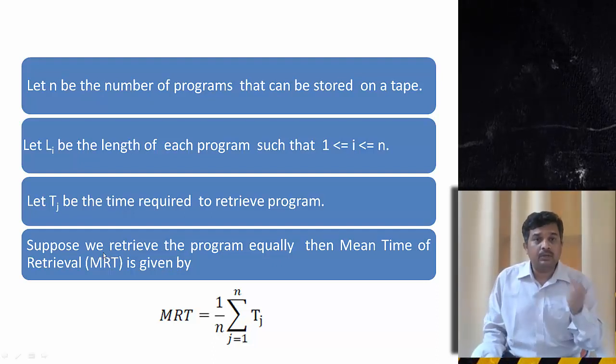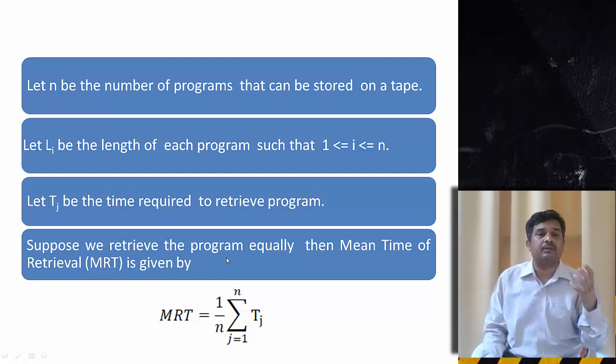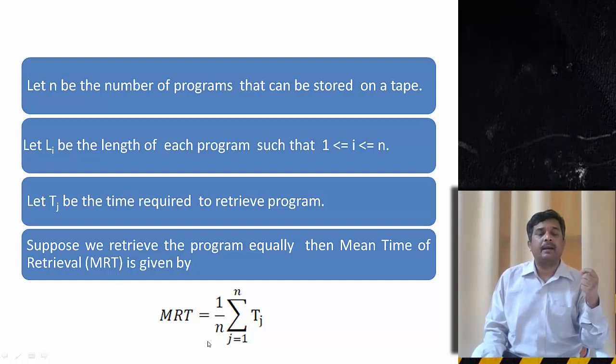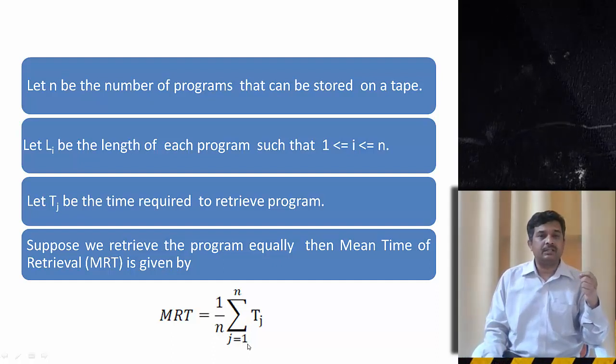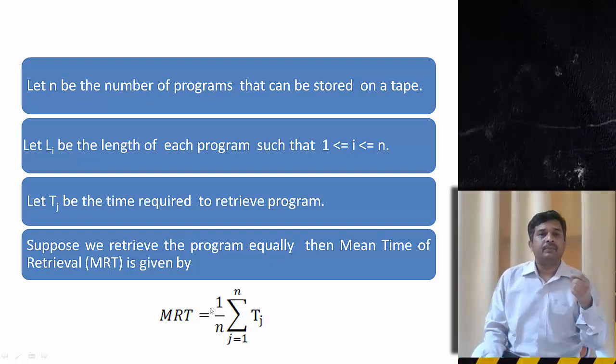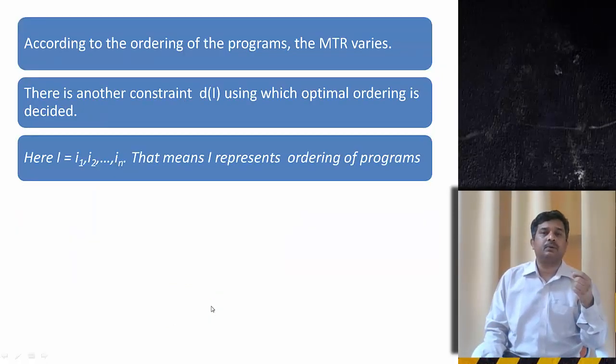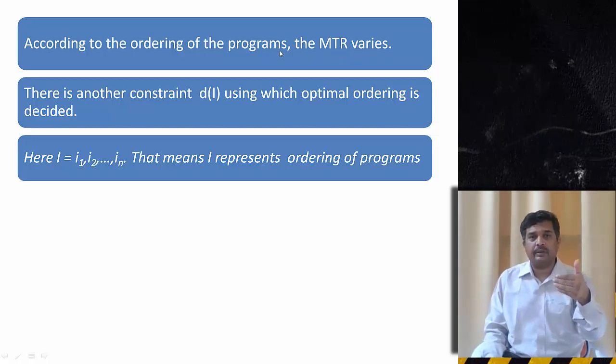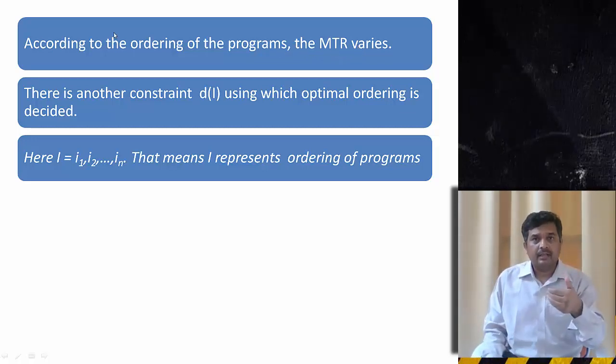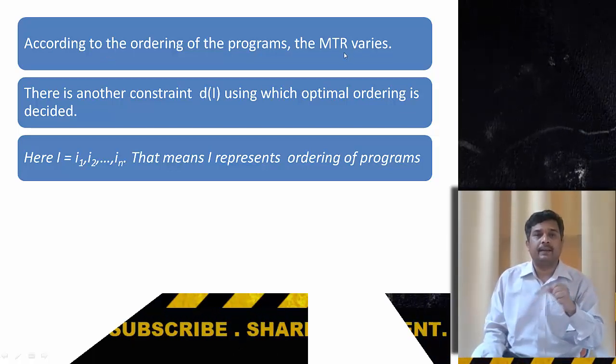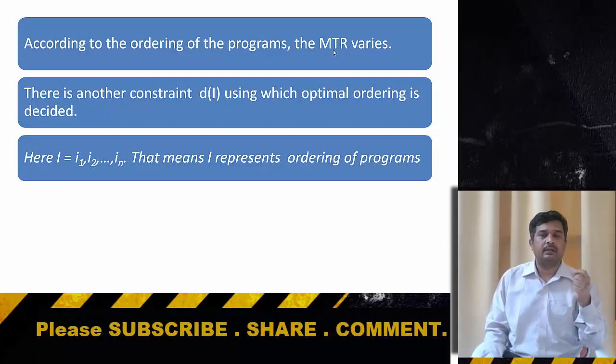So we use a concept of mean time retrieval and that is given by MRT. It is 1 by n summation of j equal to 1 to n Tj. So this is the mean time of retrieval for any program. According to the ordering of the program, MRT value varies. According to the order in which we are going to retrieve, the MRT value or minimum retrieval time values will be changing. We will see how it is happening.